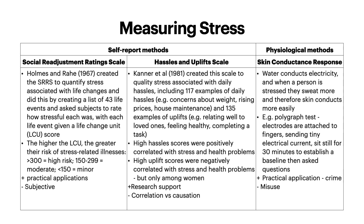Moving on to physiological methods. So the skin conductance response: the skin conducts electricity, and when a person is stressed they sweat more and therefore the skin conducts more easily. An example of this is the polygraph test — the lie detector test. Electrodes are attached to the fingers sending tiny electrical currents. The individual is asked to sit still for 30 minutes to establish a baseline of sweat levels on their skin. They are then asked questions and, as they get stressed, they sweat more, which is why it suggests someone may be lying. This has the practical application of being used as evidence in some criminal cases to identify a suspect, but it also has its misuse — it's not the most accurate, since you're probably going to be stressed in an interrogation room regardless of whether you've done it or not.